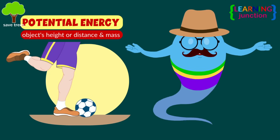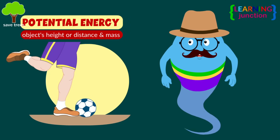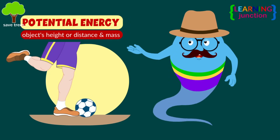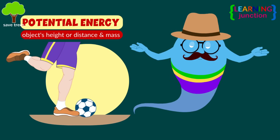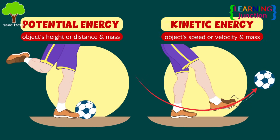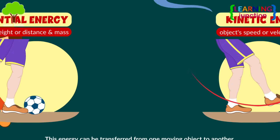Potential energy is not transferable. It depends on the height or distance and mass of the object. Kinetic energy is dependent on an object's speed or velocity and mass, and this energy can be transferred from one moving object to another.